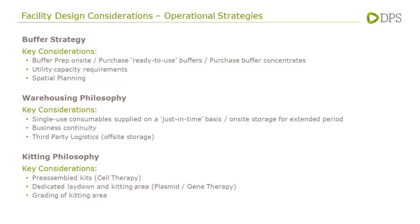Warehousing philosophy is another significant consideration because these are predominantly single-use operations. The throughput for the facility will drive the consumables requirements, and the warehousing strategy needs to address where the bulk of consumables are stored. A large quantity stored onsite — perhaps two to three months' worth — may be better from a business continuity perspective but would require a large onsite warehouse. The alternative is a just-in-time basis with a third party logistics company, requiring regular deliveries to site to meet throughput demands.